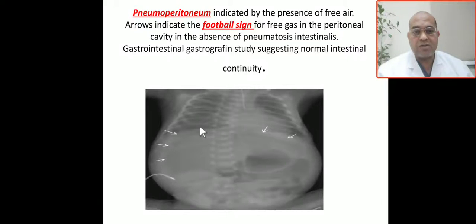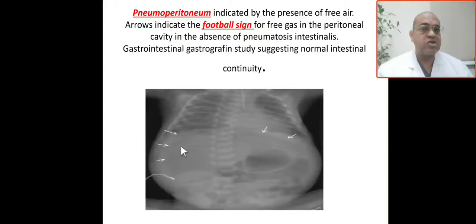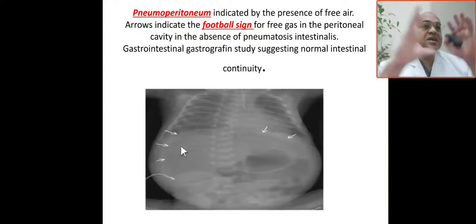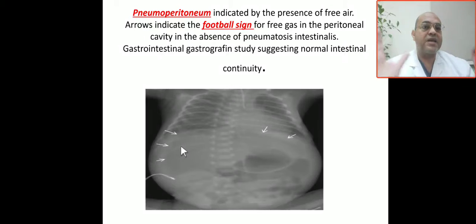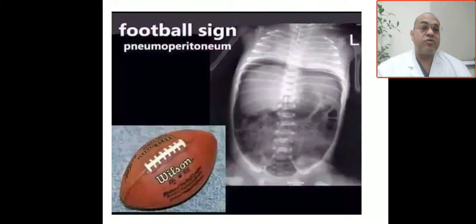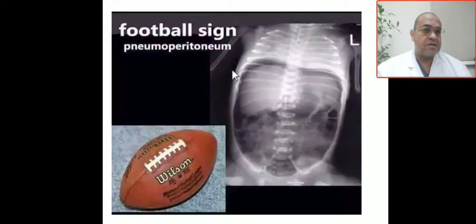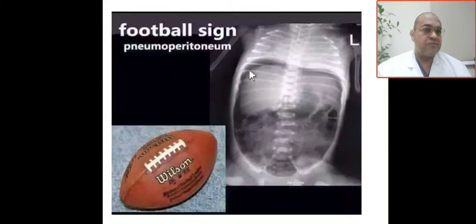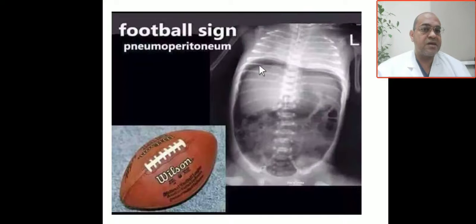You can see the arrows indicating the free air — the hyperlucent American football sign. The air takes up the entire peritoneal cavity. You can also see the air under the diaphragm. Sometimes we only see air under the diaphragm or above the liver.